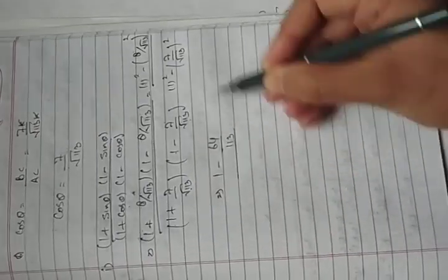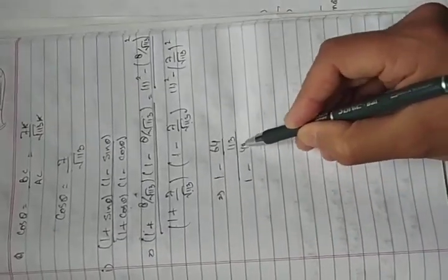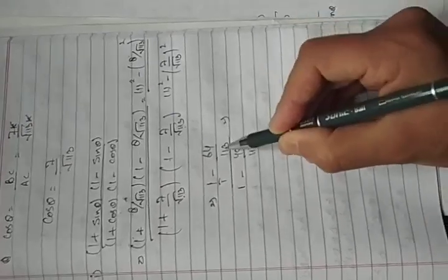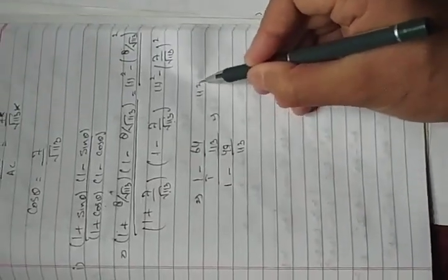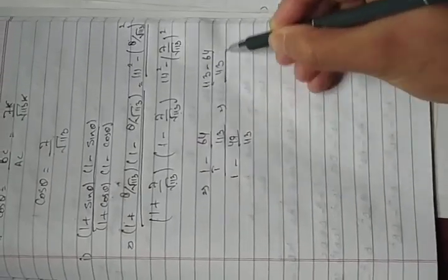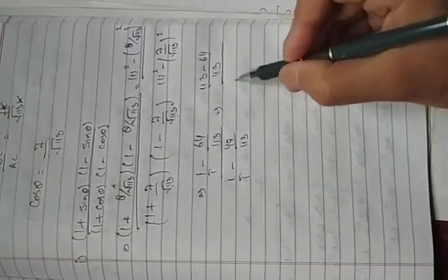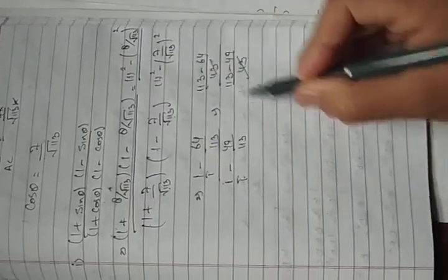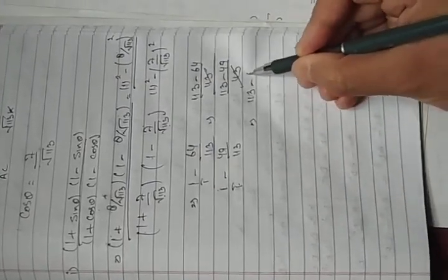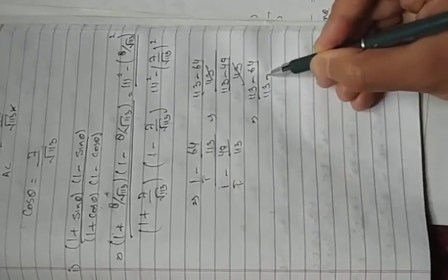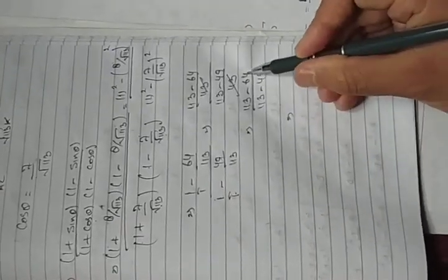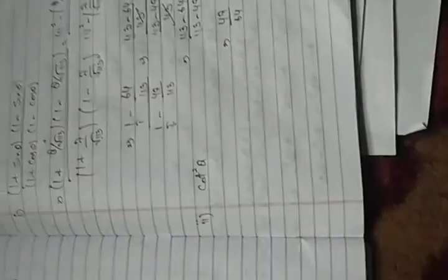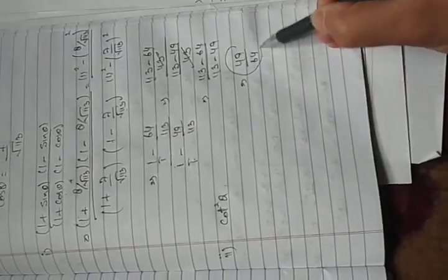So the numerator is 1 minus 64/113, and the denominator is 1 minus 49/113. This simplifies to (113 − 64)/113 divided by (113 − 49)/113. The 113s cancel out, giving 49 divided by 64. So the first answer is 49/64.